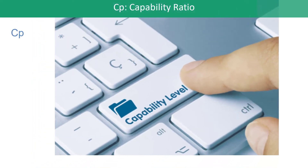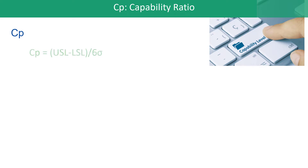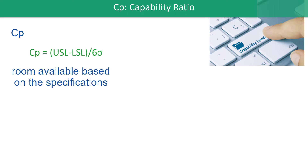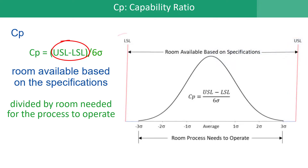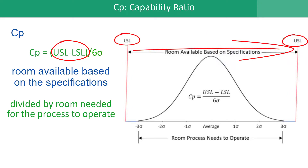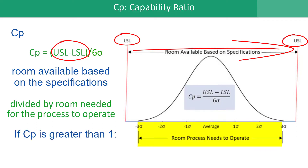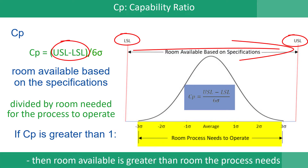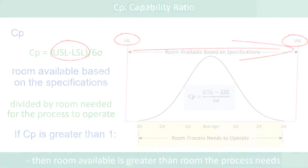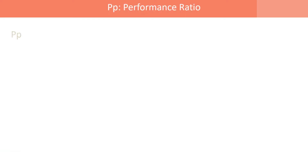Let's start with CP, the capability ratio. CP is defined as the upper spec minus the lower spec divided by six sigma, where six sigma is the estimate of the process variation from a control chart — a range control chart. It's the room based on specification (upper spec minus the lower spec) divided by the room the process needs to operate, which is six sigma. So if CP is greater than one, the room available is greater than the room the process needs, and you're in good shape.